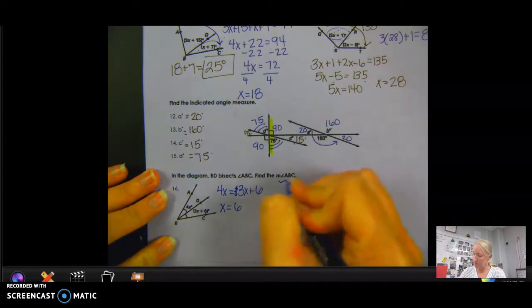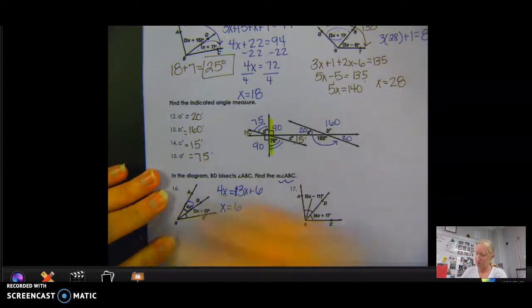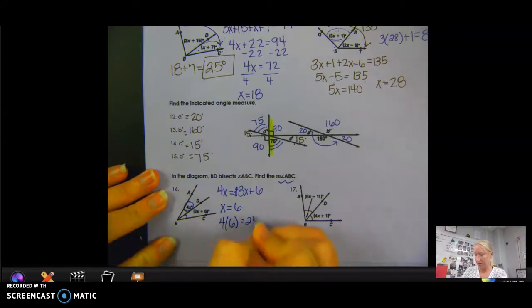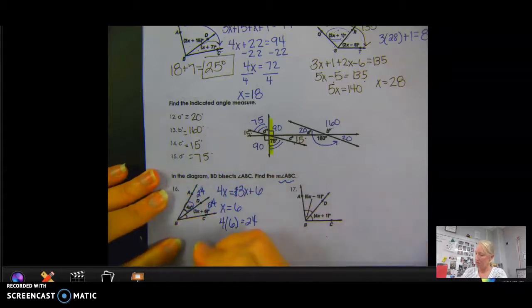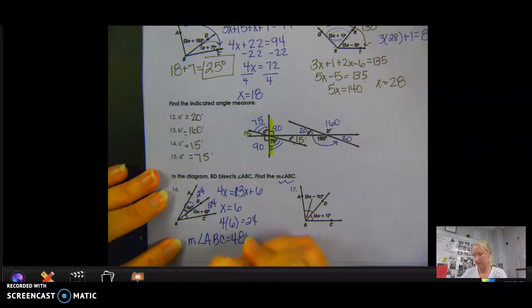So now they actually want me to find angle ABC. So I'm going to plug it into one of those. So I'm going to do 4 times 6, which is 24. That means that this angle is 24, which also means that this angle would be 24 since that bisects it. So they'd be equal.